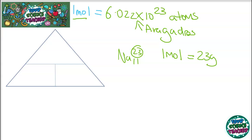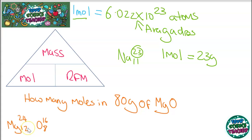So how do you calculate a mole of compounds? You need to use this calculation triangle. To calculate a mole, it equals the mass of something divided by the RFM. Let's look at that in practice. If I wanted to calculate how many moles are in 80 grams of magnesium oxide, I'd first calculate the relative formula mass: 24 plus 16 equals 40 grams per mole. Then to work out the number of moles, I do 80 grams divided by 40 grams per mole, which gives me 2 moles.